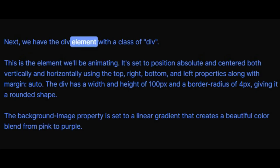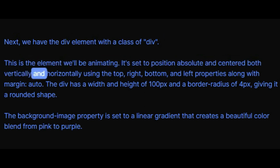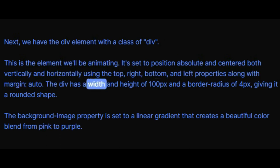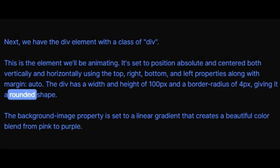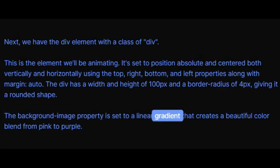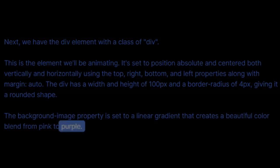Next, we have the div element with a class of div — this is the element we'll be animating. It's set to position absolute and centered both vertically and horizontally using the top, right, bottom, and left properties along with margin auto. The div has a width and height of 100px and a border-radius of 4px, giving it a rounded shape. The background-image property is set to a linear gradient that creates a beautiful color blend from pink to purple.